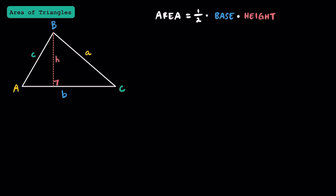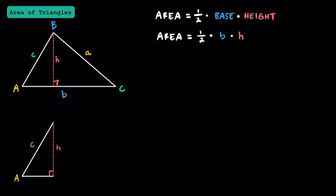Let's start with the formula: to find the area of any triangle, we can do one half times the base times the height. I'm going to represent the base and the height with b and h. While b is the side length of the triangle, h isn't — our goal is to represent h in terms of the side lengths or angles of the triangle. Using the right triangle we drew, since sine of an angle equals opposite over hypotenuse, we can say sine of angle A equals h over c. Multiplying both sides by c, we find that the height h equals c times sine of angle A.